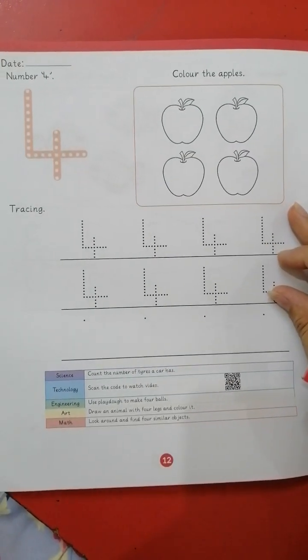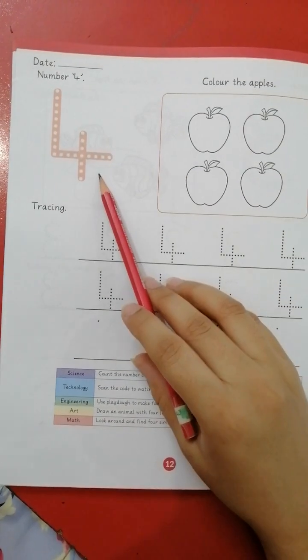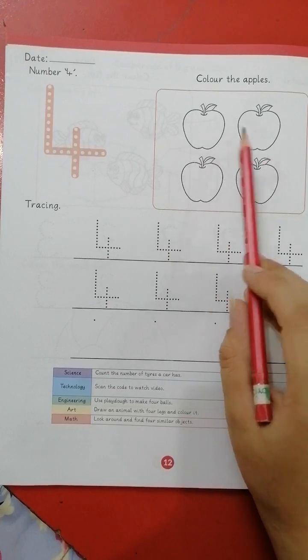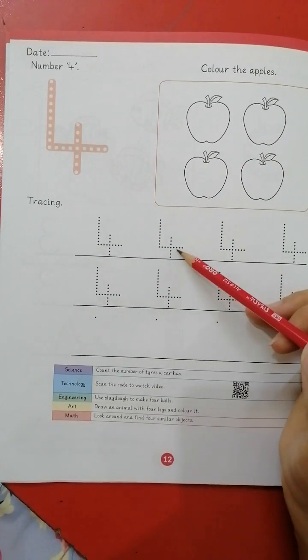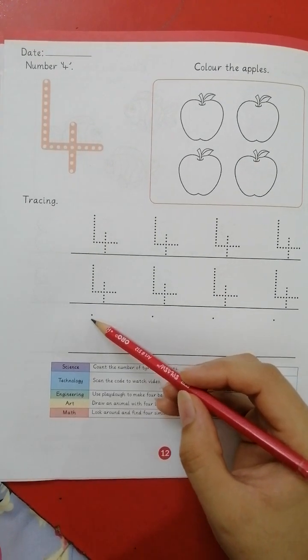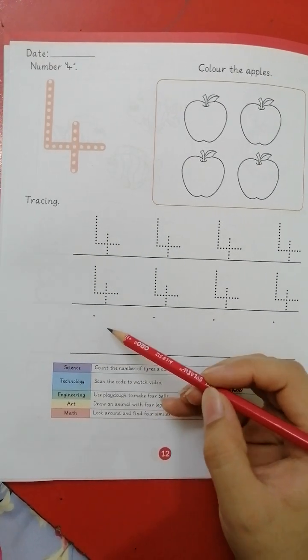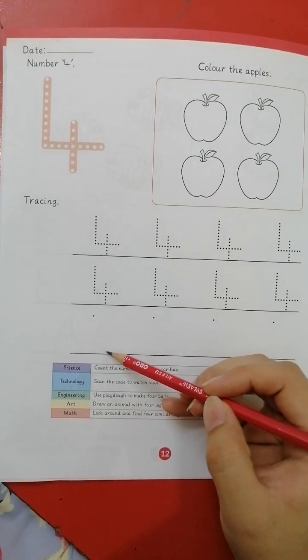Next is number four. You have to trace it. Then count apples. One, two, three, four. Color it. Trace number four and then write number four. One straight line down, sleepy line, and one straight line across the sleepy line.